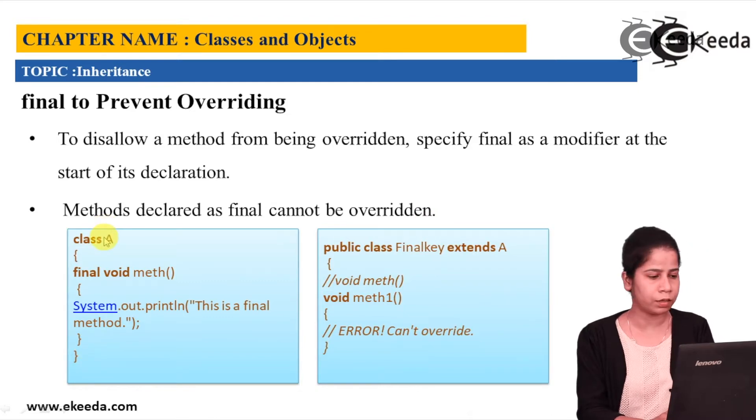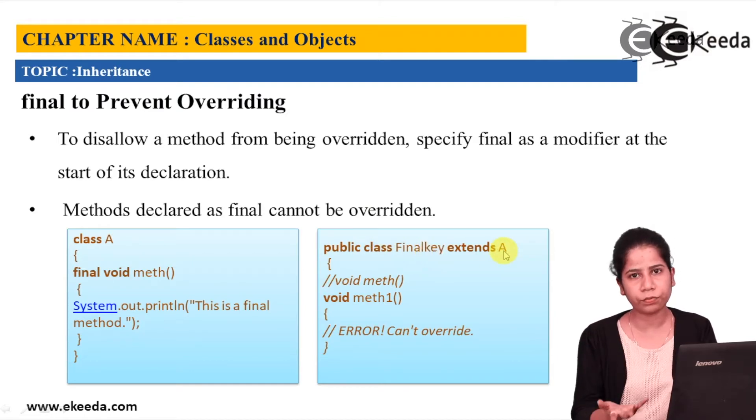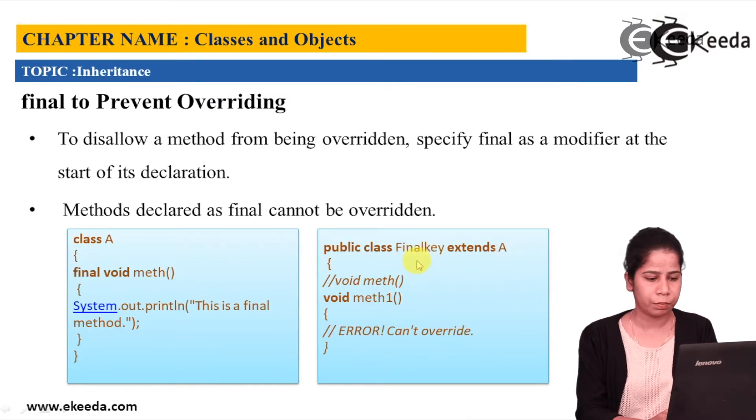So we have a small example over here. Here I'm having class A, which is having method math and it is having modifier that is final. So after that, I'm having class final key, which is extending A. So by the rule of inheritance, all the methods and the variables of A is accessible to final key class. But if you see, if I try void math over here, then it will be giving me error because you cannot have the same signature as the parent over here.